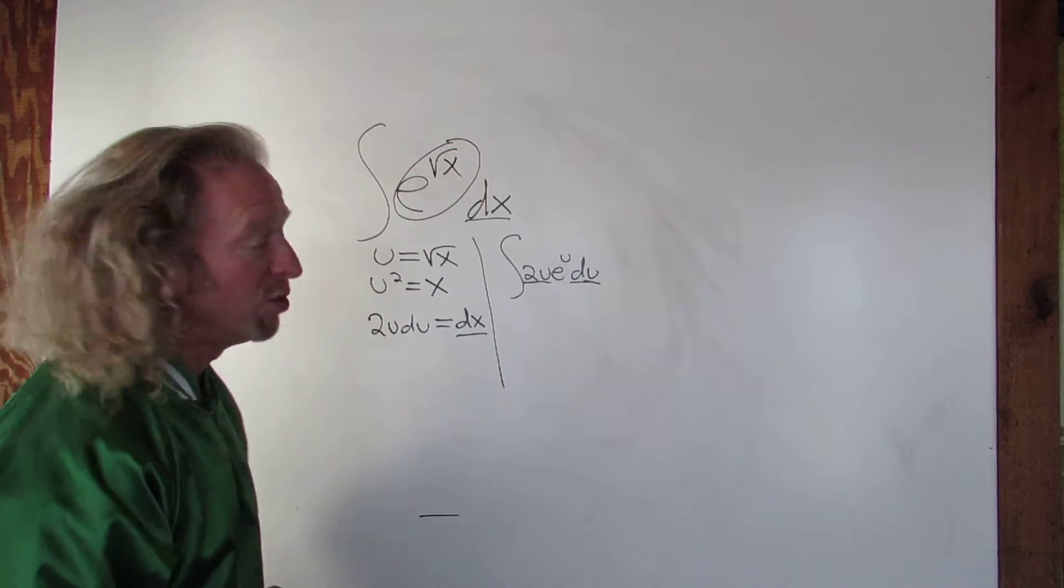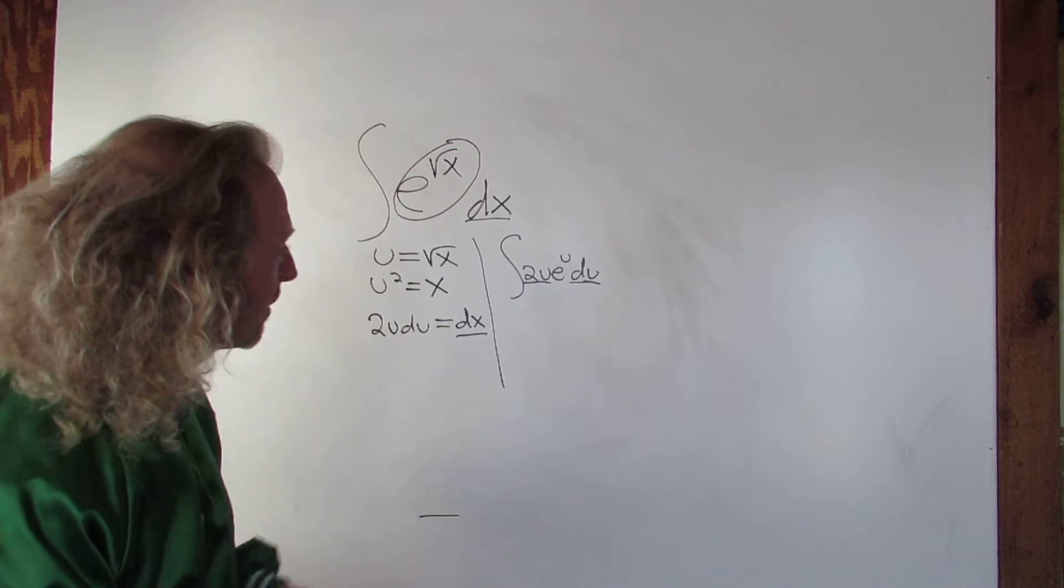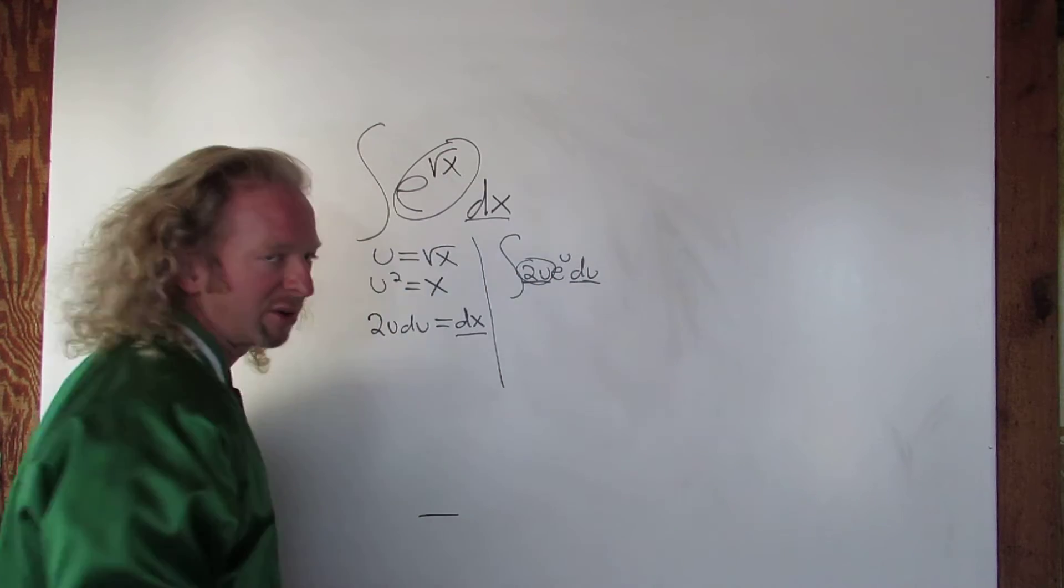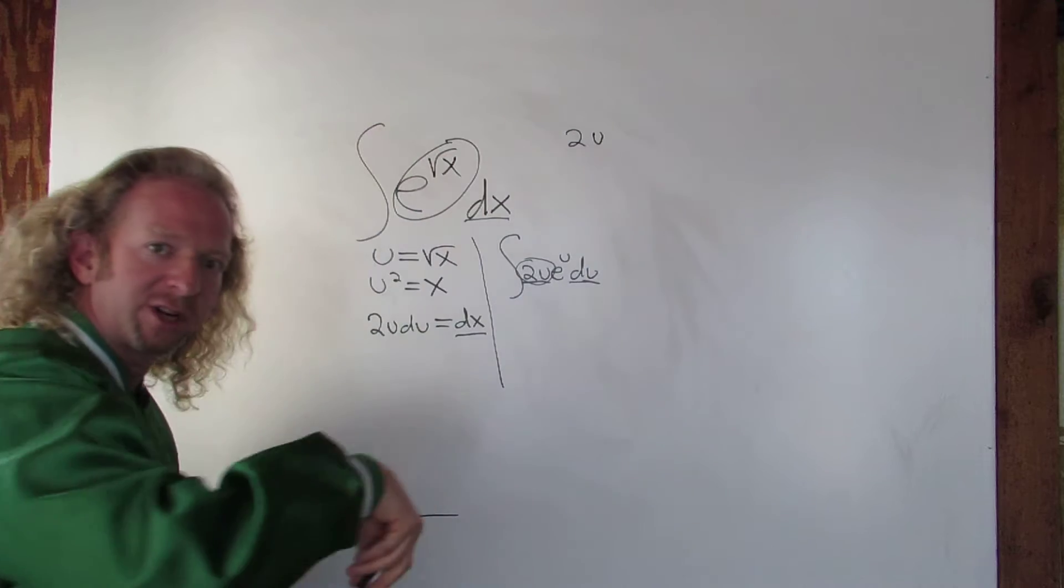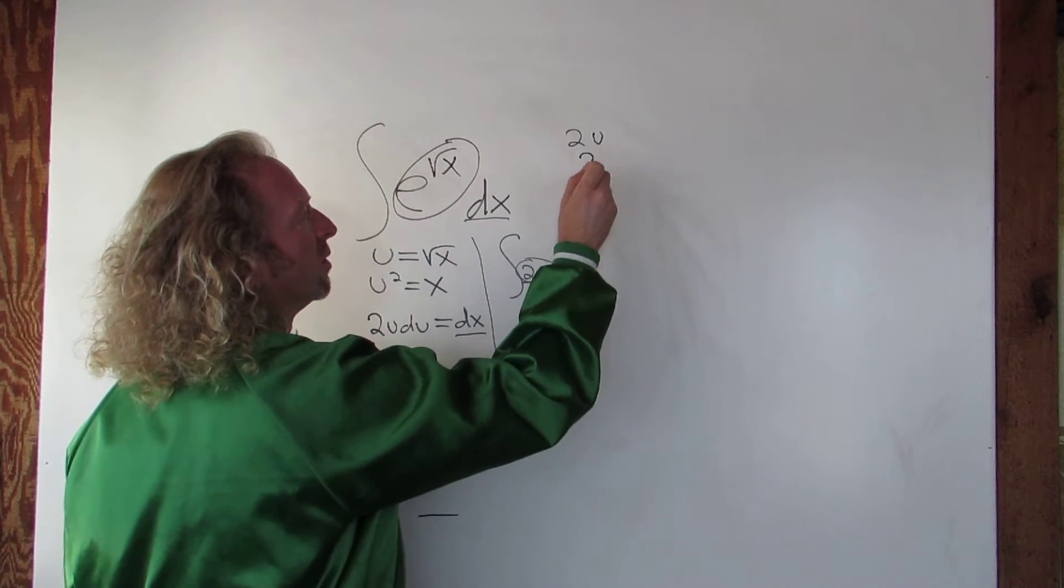Now for this one, we can use what's called tabular. So recall for tabular, you pick the piece that is eventually 0 after repeated differentiations. That would be 2u. And then you just differentiate it. So 2, 0. The derivative of 2u is 2. The derivative of 2 is 0.